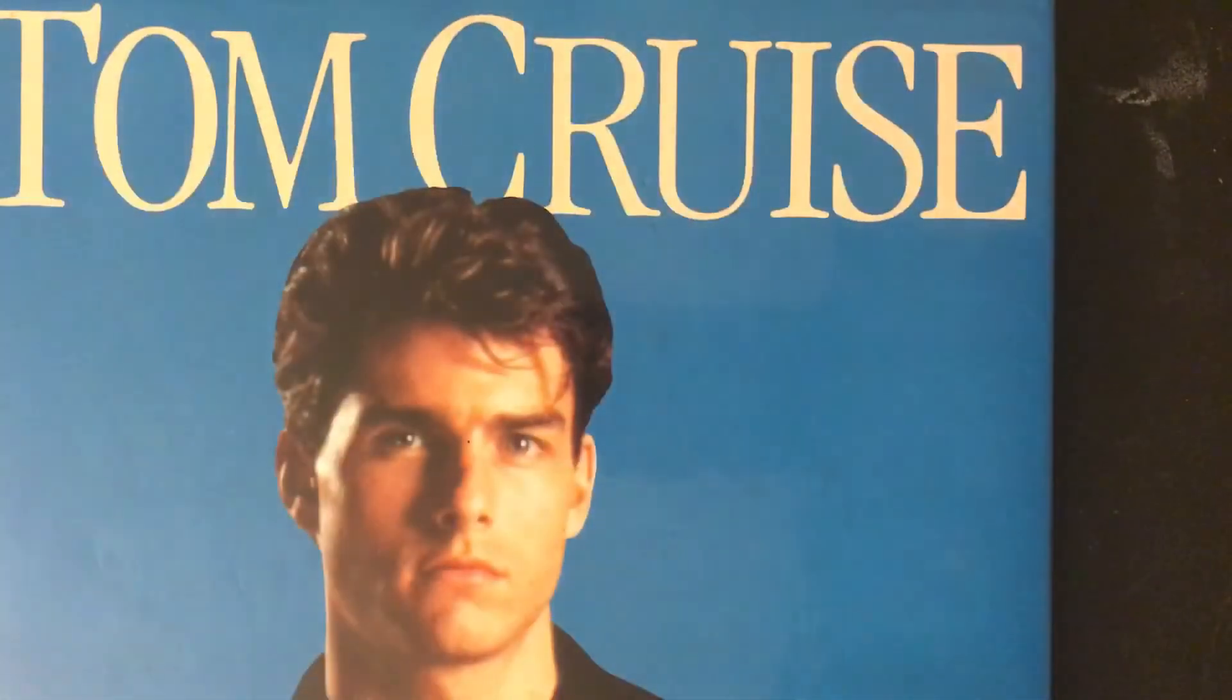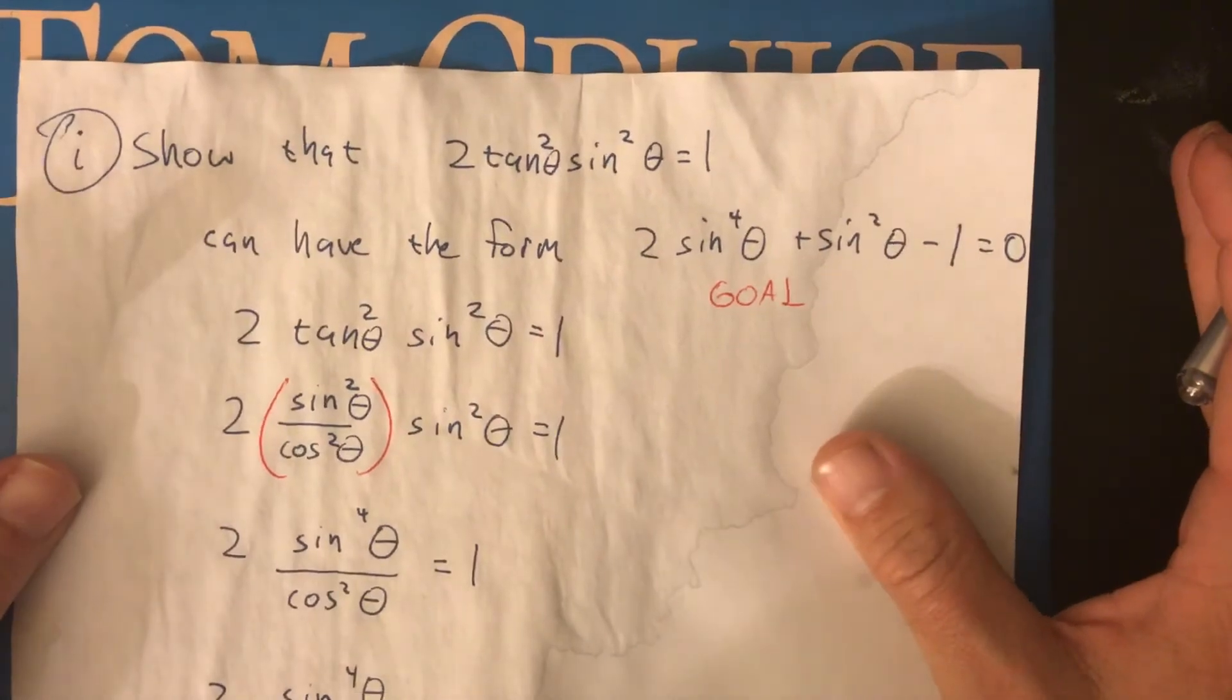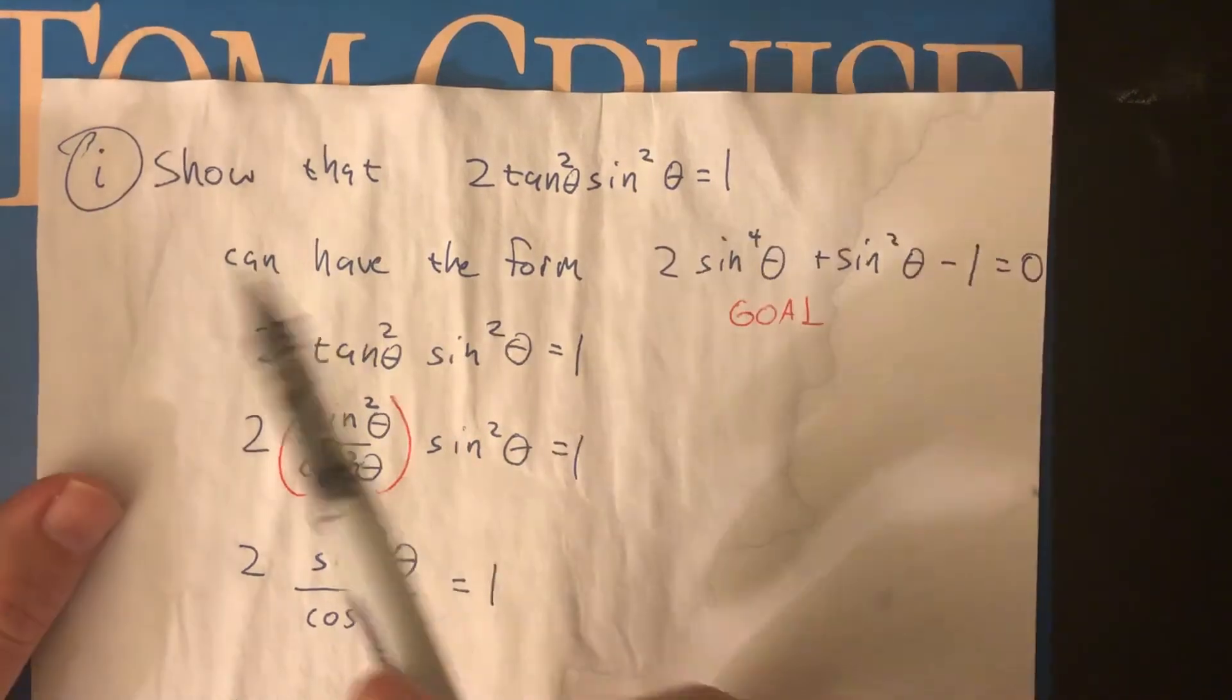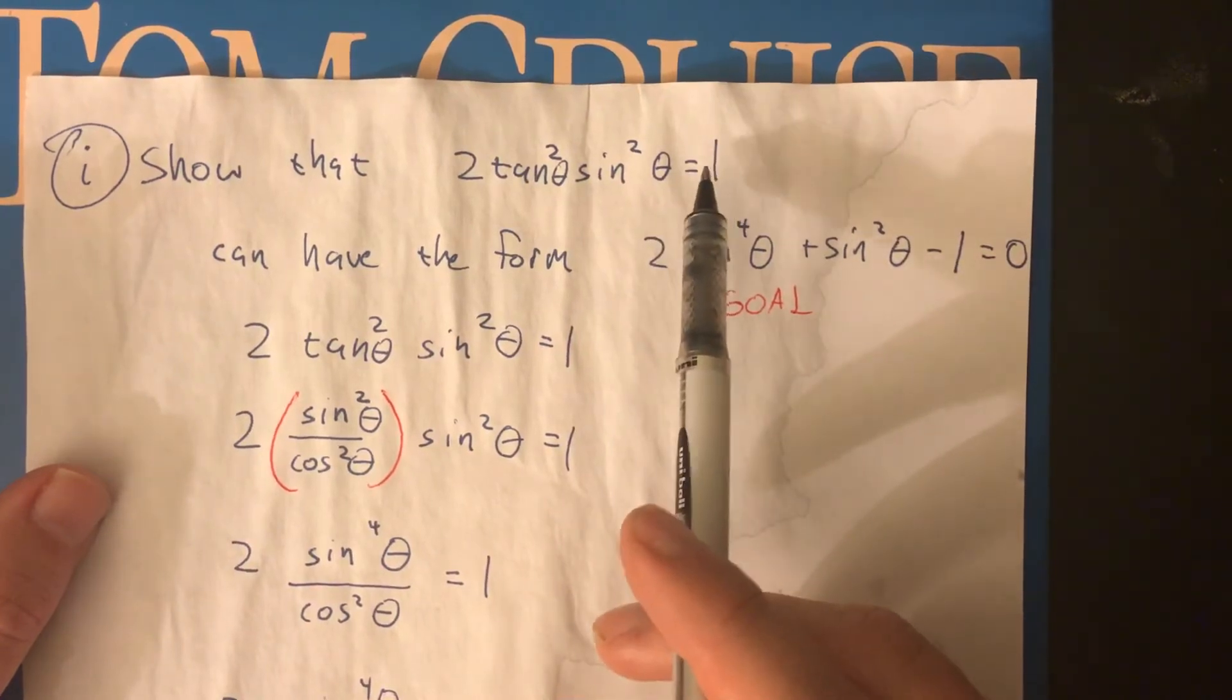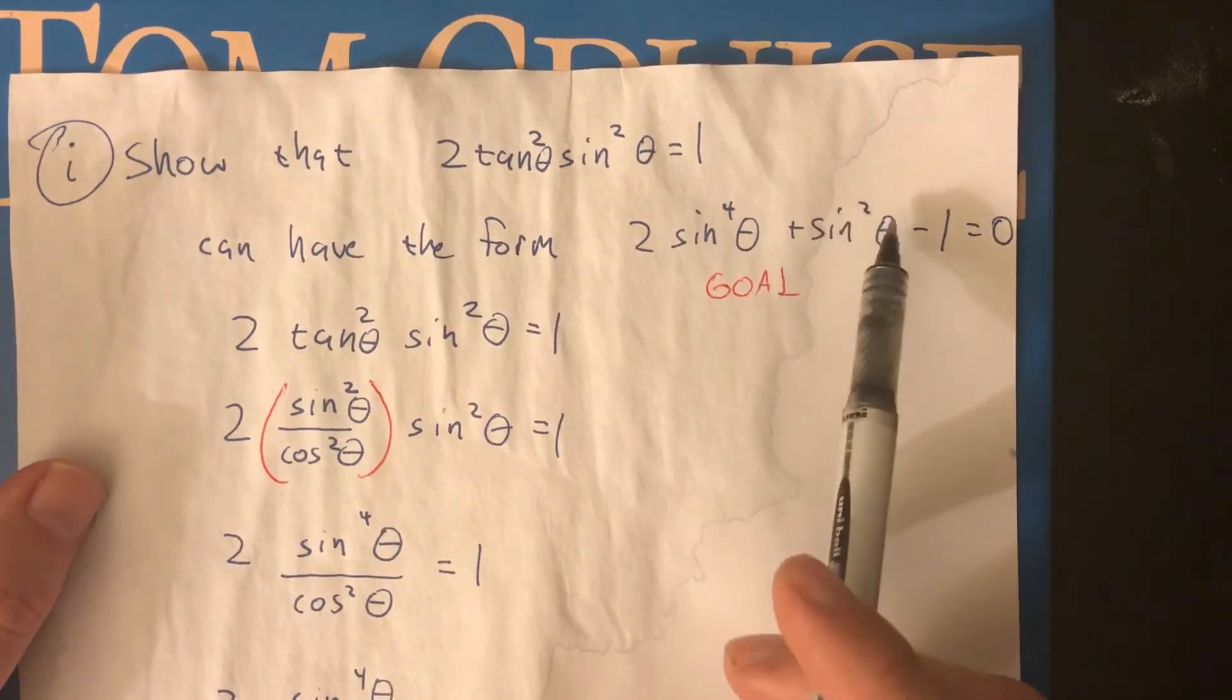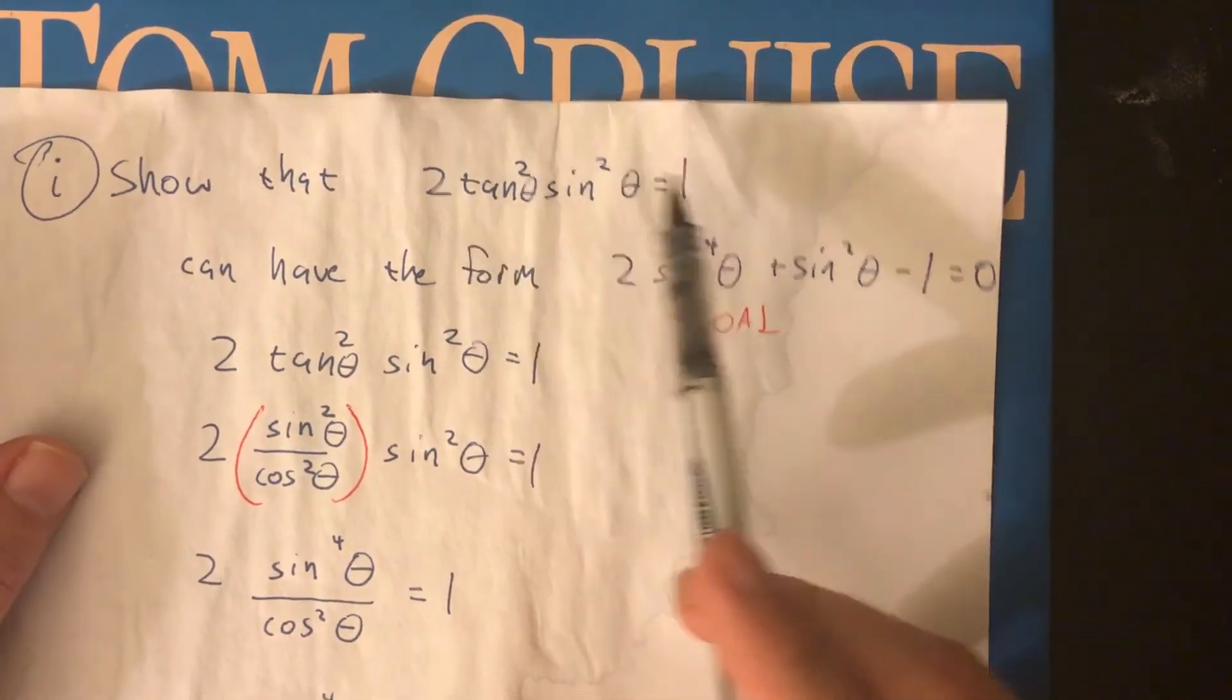Alright, let's look at one more. And here's another one I took off an actual trig exam. Okay, this is how, or not trig, but an ACE exam. It said, part I, show that 2 tan squared sine squared theta equals 1 can have the form 2 sine to the 4th plus sine squared minus 1 equals 0.